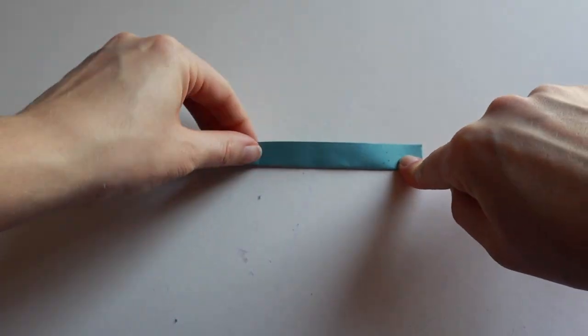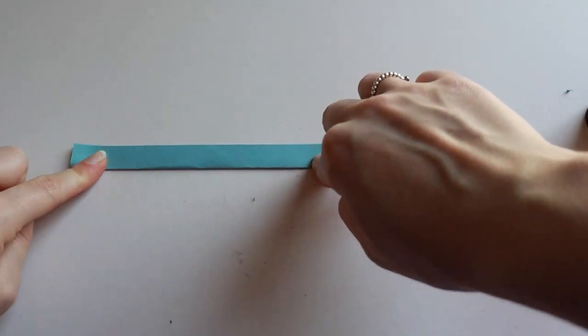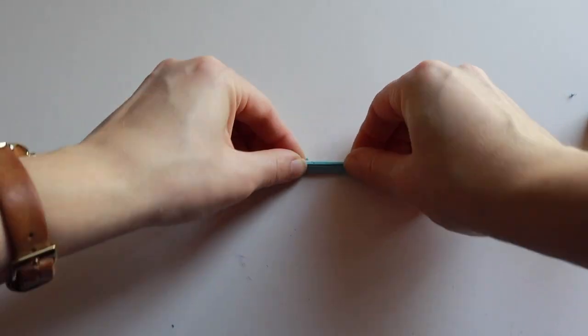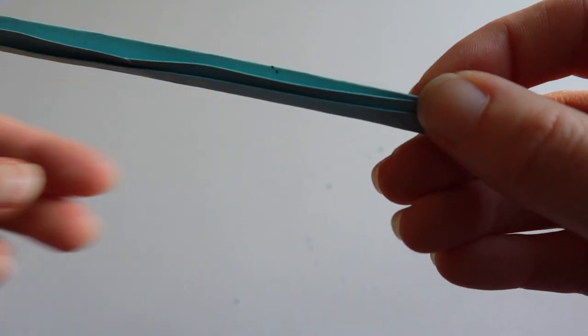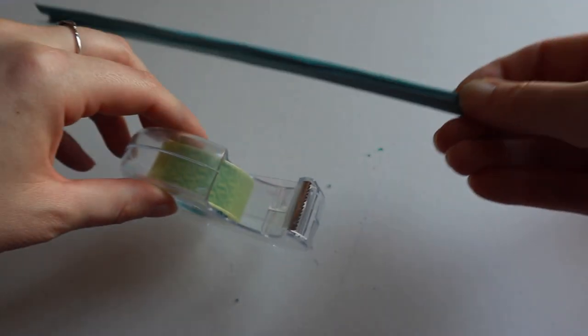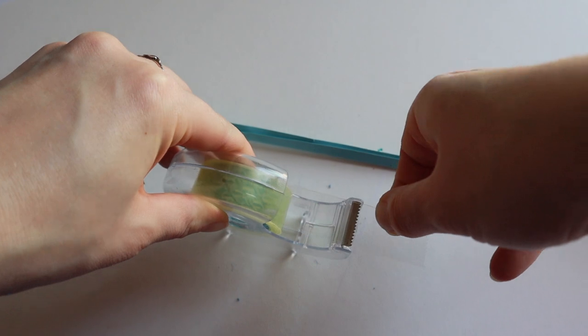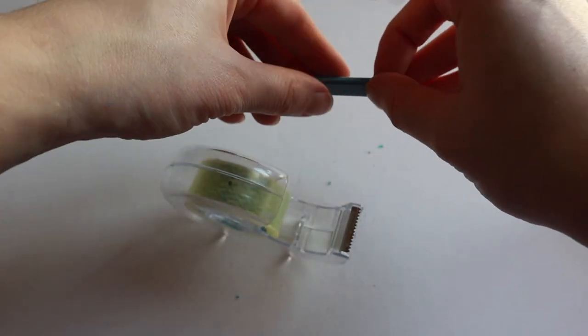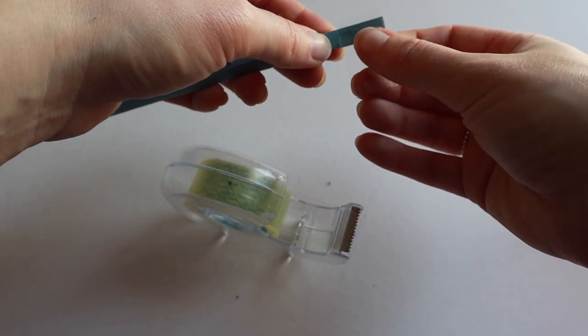Fold it in half lengthways, and then fold again. Wrap sellotape tightly around the end, so you create a thick, flat shape.